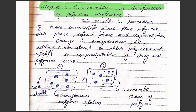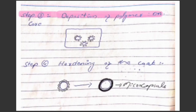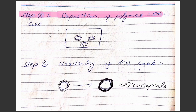These three immiscible phases are obtained by changing the temperature of the dispersion, or changing the pH of the dispersion, or by adding a non-solvent in which the polymers are not soluble. This way we get the polymers in separate form, and this process is called coacervation.